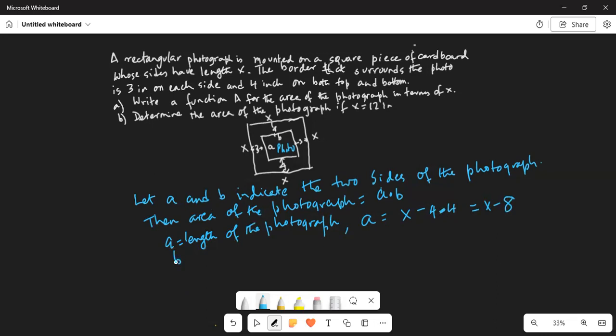And b is the width of the photograph. b is the width of the outside square x, from which you subtract the two borders on the two sides, which is x minus 3 on one side and minus 3 on the other side, so it is x minus 6.